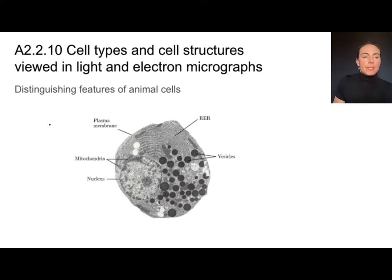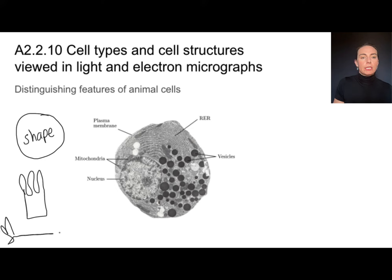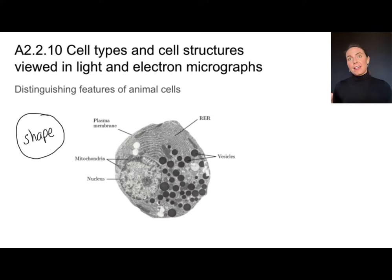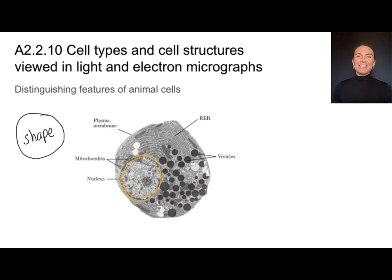Animal cells are a little tougher. They don't have a cell wall, so their shape is more blobby — though animal cells can also look long and skinny, so relying on shape alone isn't a great idea. Think about the absence of a cell wall — no rigid geometric shape. I won't see a large central vacuole, and I won't see chloroplasts. I should still be able to find the nucleus, which tells me it's a eukaryotic cell. From there, identifying it as an animal cell is about elimination: no vacuole, no chloroplast — it's an animal cell.